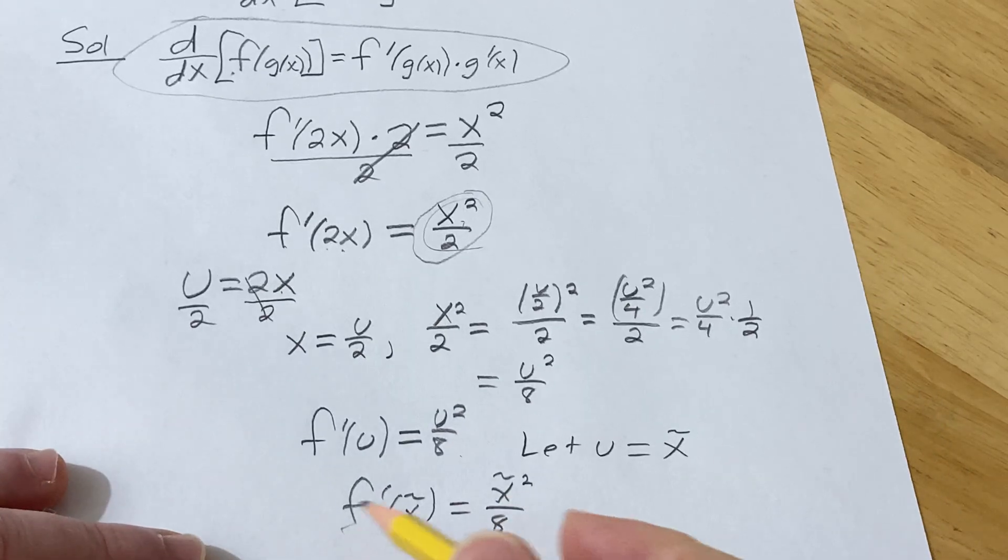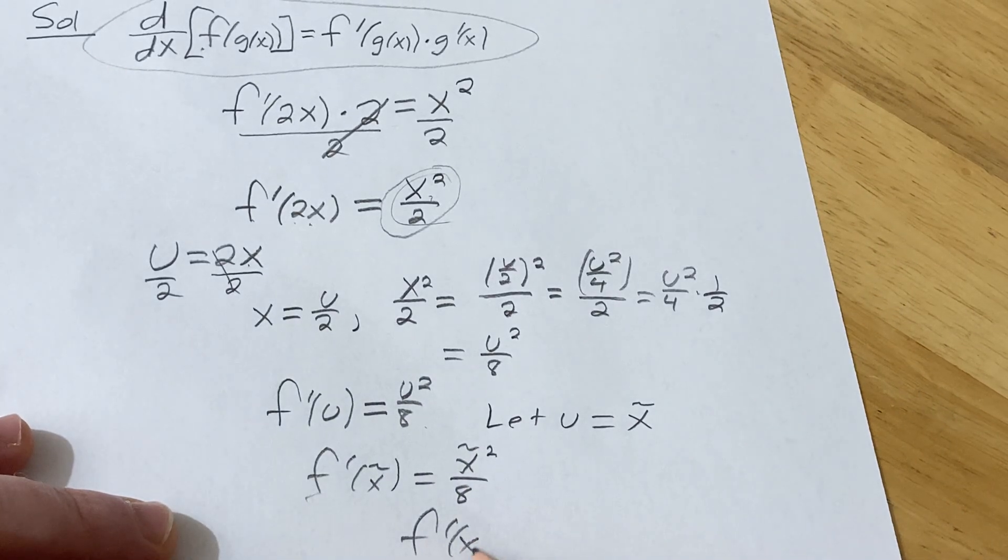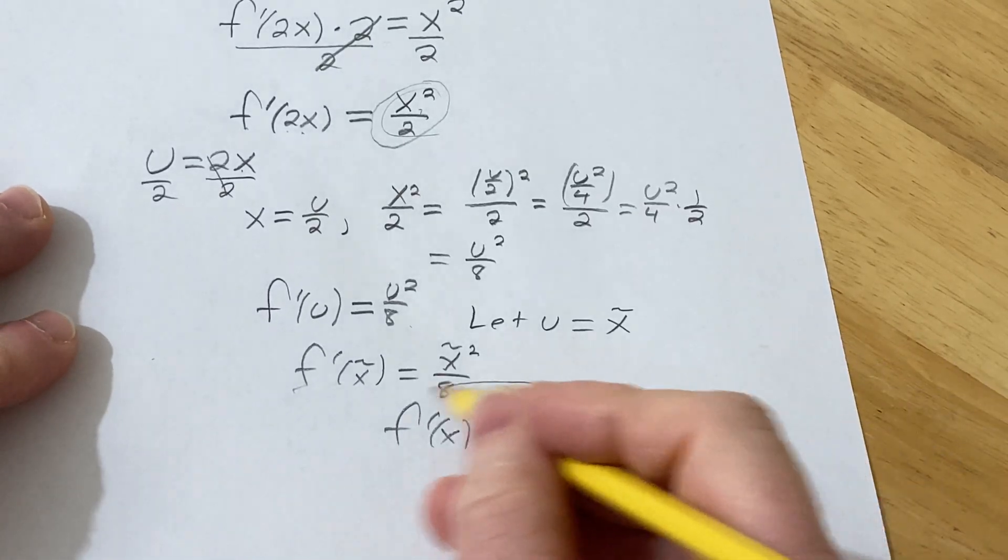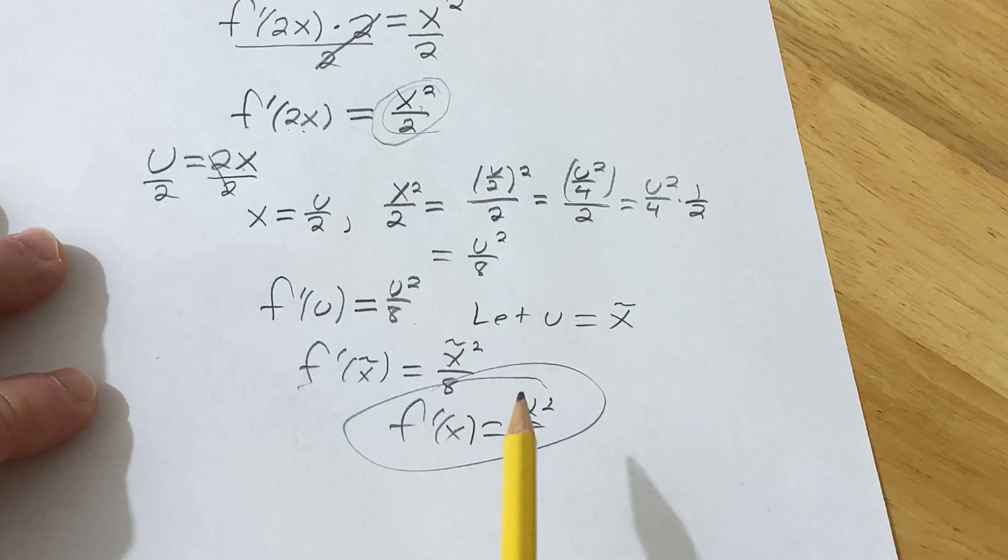And if you want to be really abusive, you can just say it's x. So f prime of x is equal to x squared over 8. And so that would be the derivative of f.